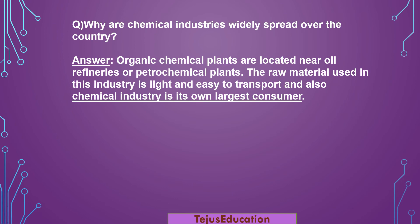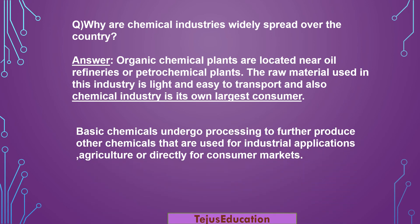The meaning of 'chemical industry is its own largest consumer' is that the end product of one chemical industry is the raw material for another chemical industry. Basic chemical processing produces other chemicals that are used for industrial applications, agriculture, or directly for the consumer market. Transportation is easier because the materials are light.